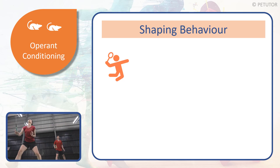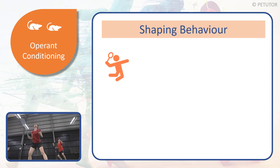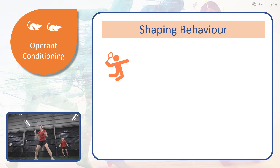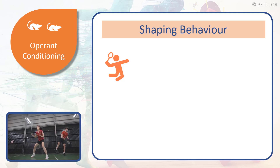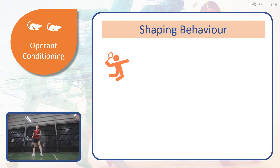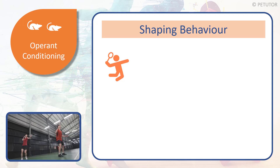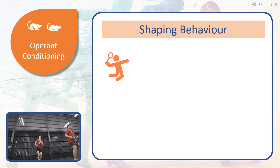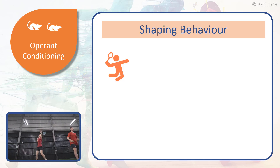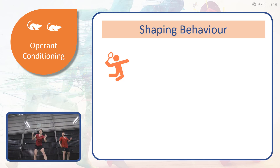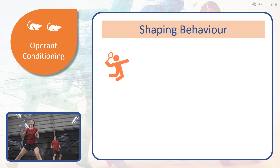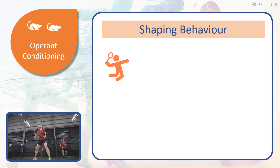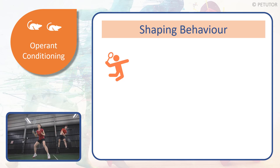Shaping behaviour then focuses on the individual, on the learner, and what they are doing in order to try and carry out or make that desired response. Looking at the video here, we're putting the shuttlecock to the back of the court and giving the opportunity for the performer, the learner, to play this particular shot, which is the overhead clear. You can see that their behaviour is shaped and slightly modified every time in order to carry out that particular movement.